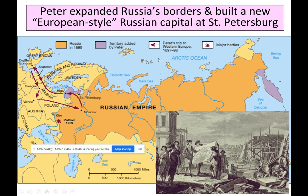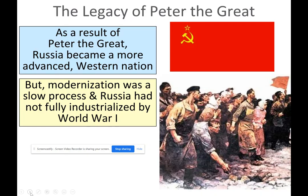Peter expanded Russia's borders and built a new European-style Russian capital at St. Petersburg. Russia became a more advanced, westernized nation as a result of his reforms.